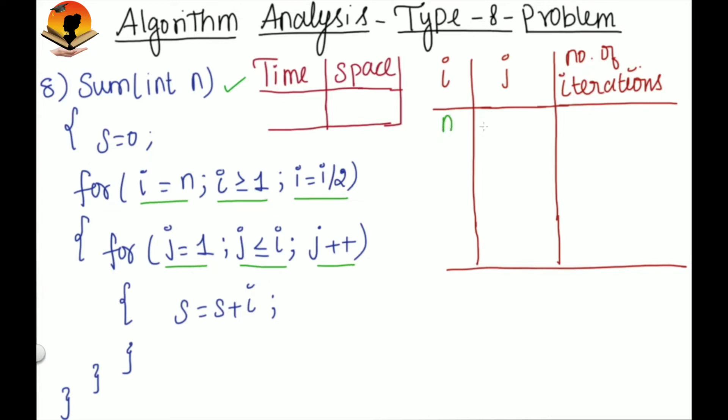Initially, i is n. So j ranges from 1 to n because that is our condition - j should be less than or equal to i. Here, i is n. So for the first iteration of the outer loop, the inner loop will run from 1 to n, that is n times.